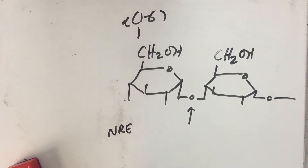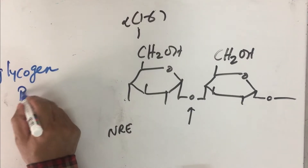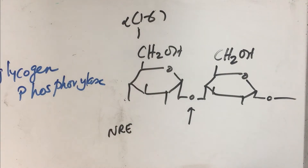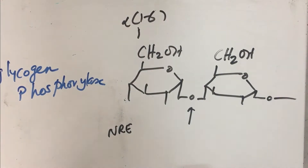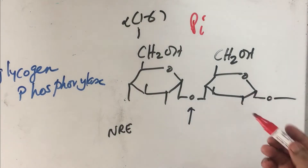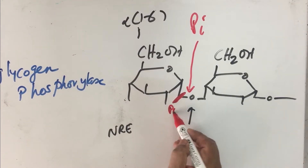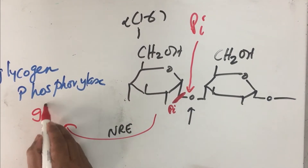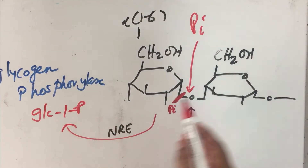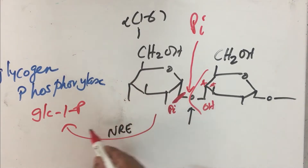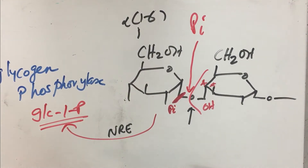In glycogenolysis, with the help of an enzyme known as glycogen phosphorylase — we will look at this enzyme elaborately later on — glycogen phosphorylase adds an inorganic phosphate. This inorganic phosphate cleaves the glycosidic bond here, and the inorganic phosphate gets attached to the released residue. So this becomes glucose-1-phosphate, and the remaining end becomes an OH on the fourth carbon.